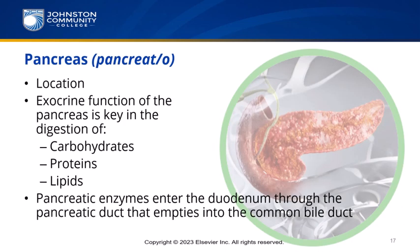The combining form pancreato means pancreas. The pancreas is located in the upper left quadrant behind the stomach. It is involved in the digestion of carbohydrates, proteins, and fats — which we know as lipids. Pancreatic involvement in digestive function is considered exocrine, meaning it secretes out through a duct. Later we will discuss the endocrine function of the pancreas, where it secretes within the bloodstream.